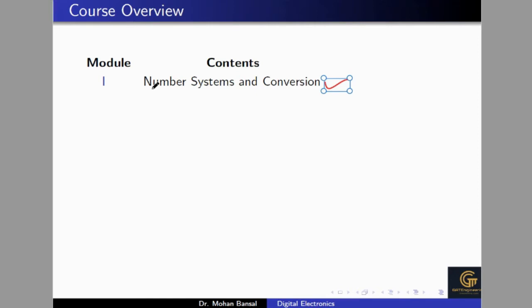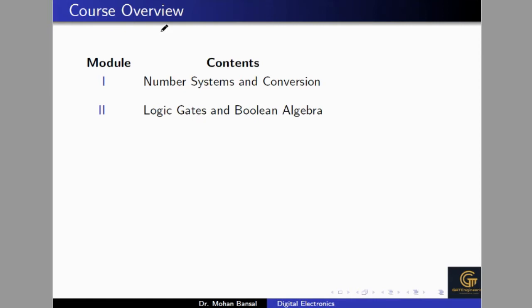We will also cover code converters like XS3 to BCD converter and BCD to XS3 converter. After that we will talk about logic gates and Boolean algebra. In this part we will discuss gates like OR gate, AND gate, XOR gate, XNOR gate, and others. We will also discuss universal gates — NAND and NOR. We will simplify expressions with the help of Boolean algebra and logic gates.